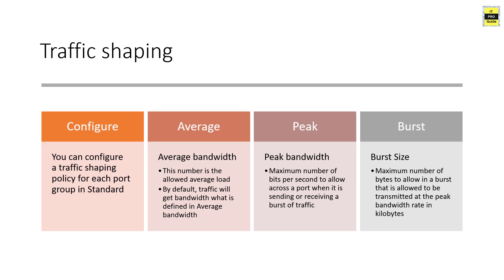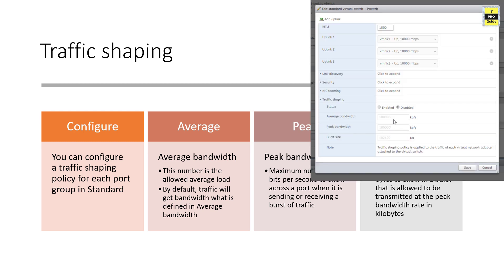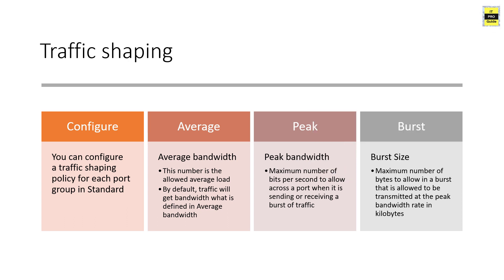The final part of vSphere standard switch configuration is traffic shaping, which only applies to outgoing traffic and can be configured at either the switch level or port group level. The first parameter is average bandwidth, which defines the default bandwidth available. The second is peak bandwidth, the maximum bits per second allowed when sending or receiving a burst. Burst size is the maximum number of kilobytes allowed in a burst transmitted at the peak bandwidth rating.